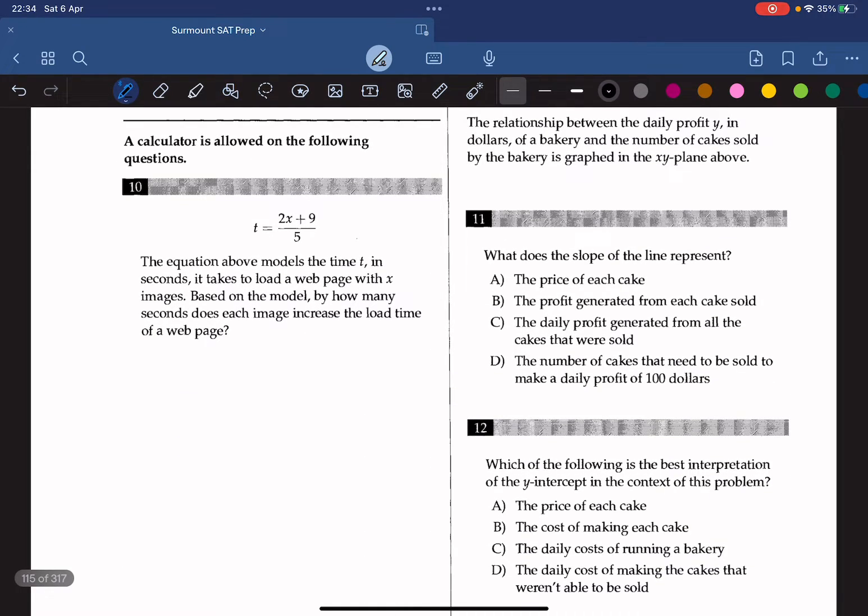Question 10: the equation above models the time T in seconds it takes to load a web page with X images based on the model. By how many seconds does each image increase the load time of a web page? To see the answer more clearly, we can rewrite the equation in the slope intercept form, which is y equals mx plus b. By doing this, we get T equals 2 over 5x plus 9 over 5. So the slope here is 2 over 5, which is also 0.4. Thus, it increases by 0.4 for each image on the web page.